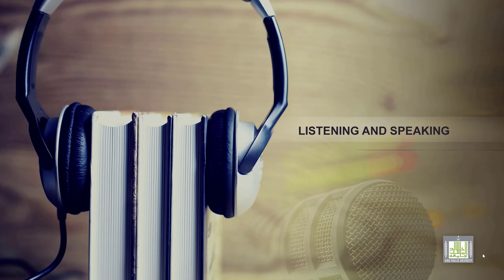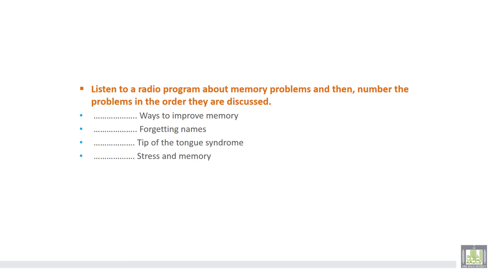To get more information about memory problems, we are going to listen to a radio program about memory problems and then number the problems in the order they are discussed. So these are the four topics mentioned in the program. Your role is to listen and then number the topics in the order they appeared or they are discussed.